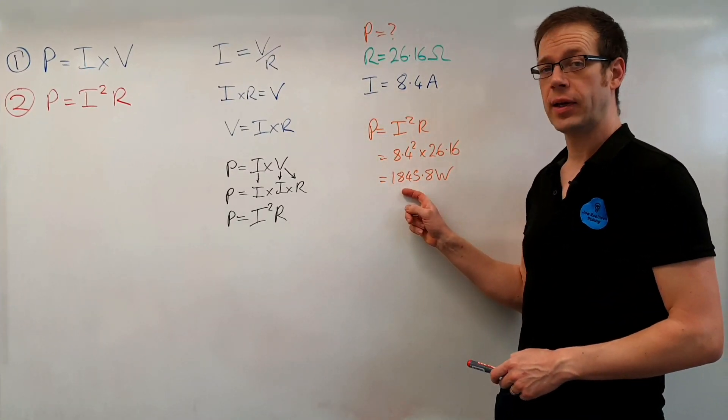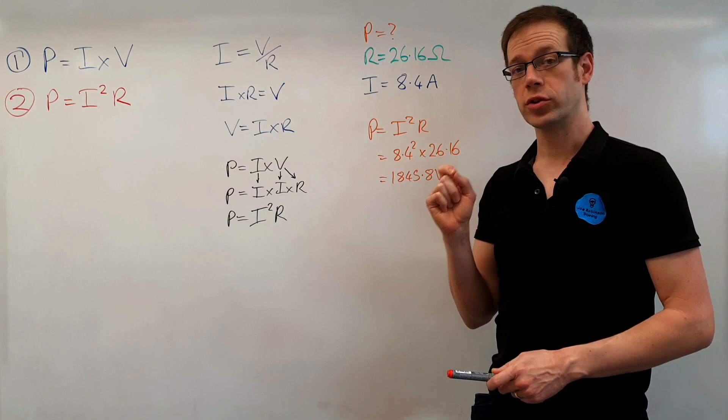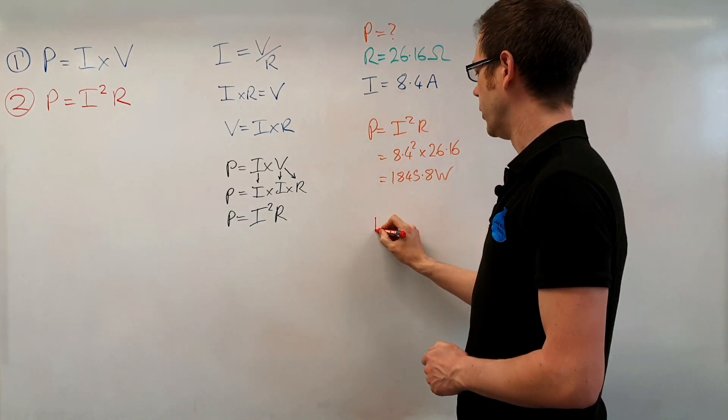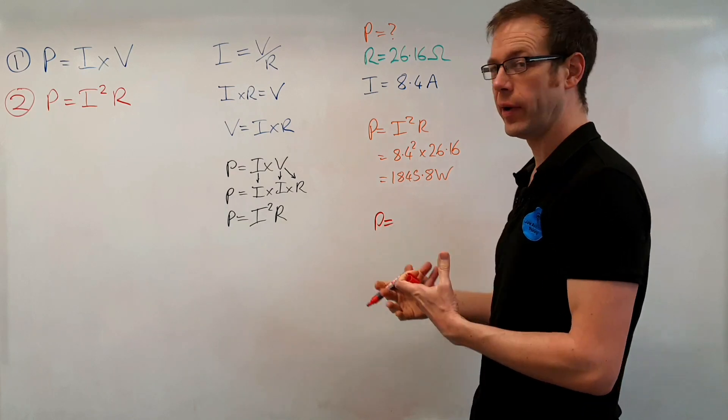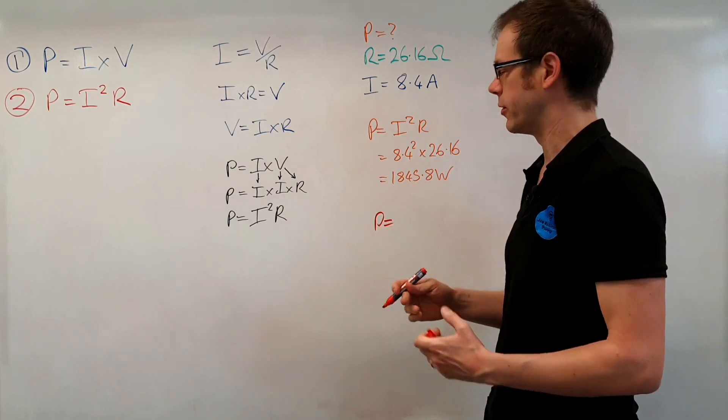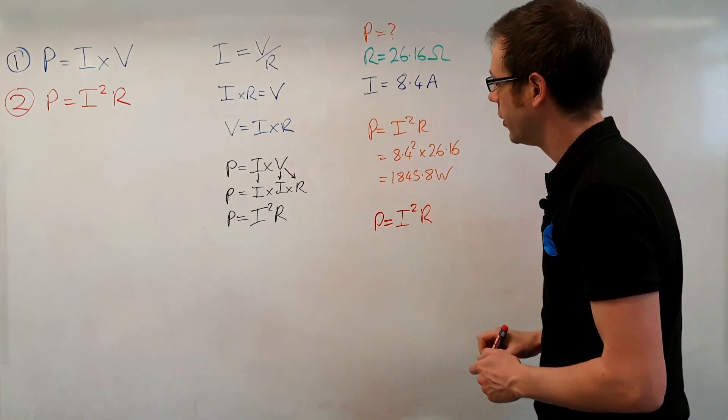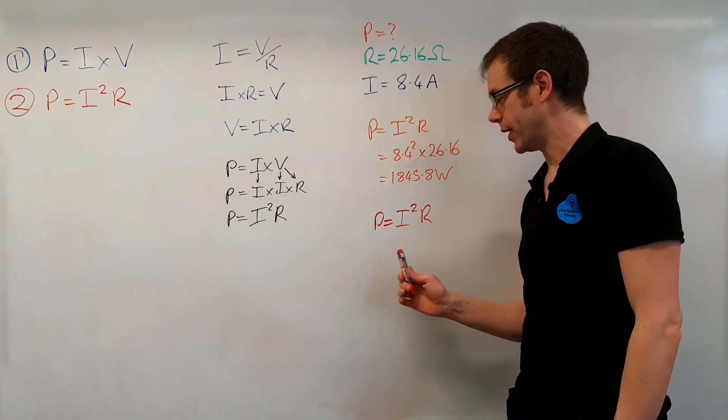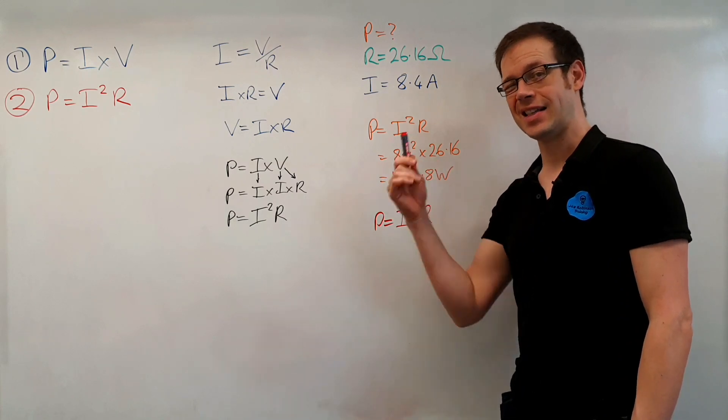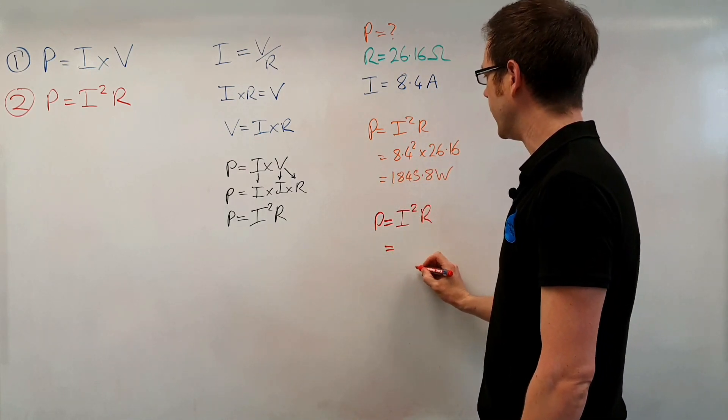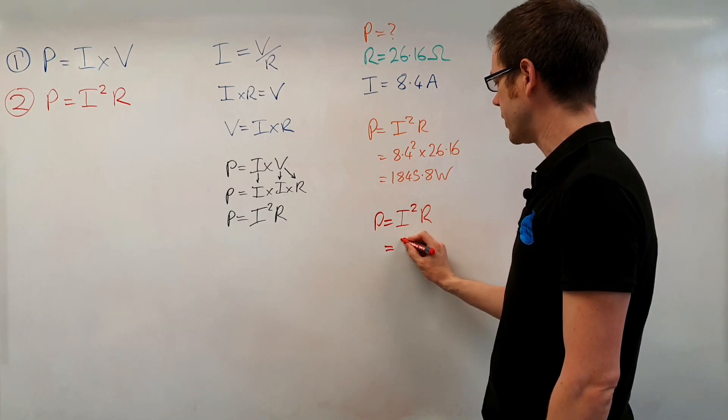So this was the value that we calculated when the heater was cold now let's have a look at the value that we calculate when the heater has had current flowing through it and the heating element has got hot and increased its resistance a little bit. We start off from the same point P equals I squared R. Notice that every single time I do a calculation I write down the formula and that's helped me to remember all the formulas that we need to know for electrical science and we're going to put in the same current 8.4 we're going to square that and then we're going to times that by our new resistance that we just measured down in the workshop of 27.05 ohms.